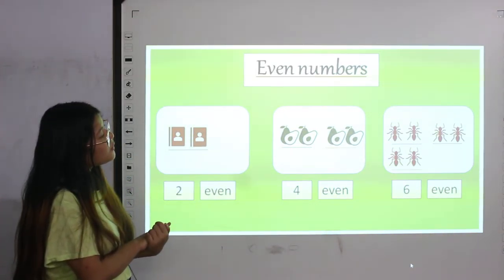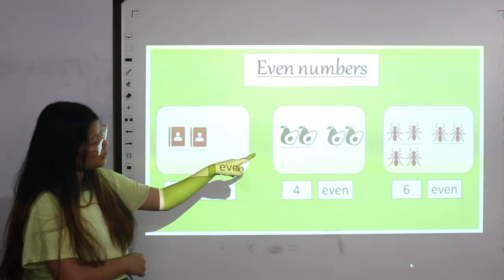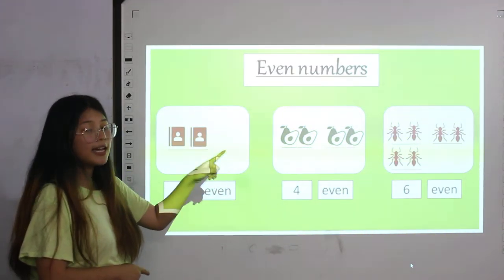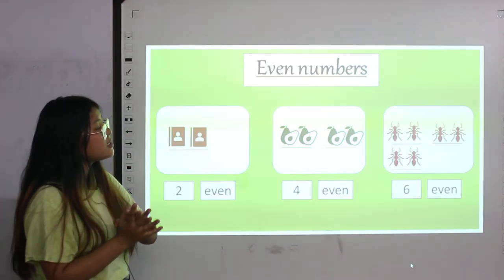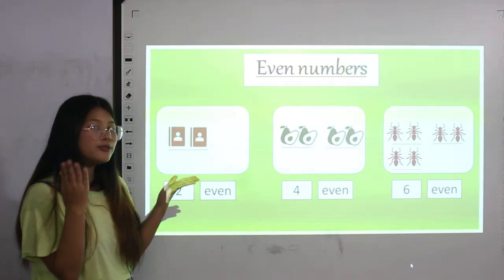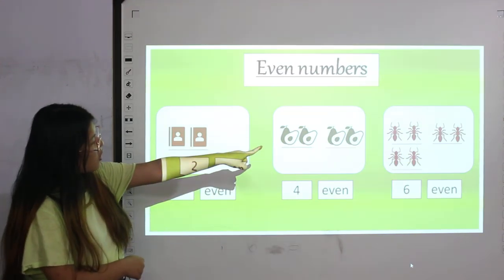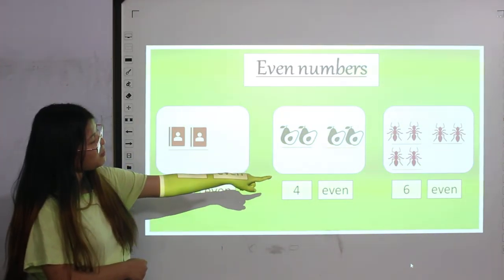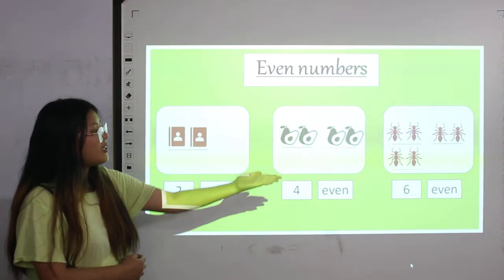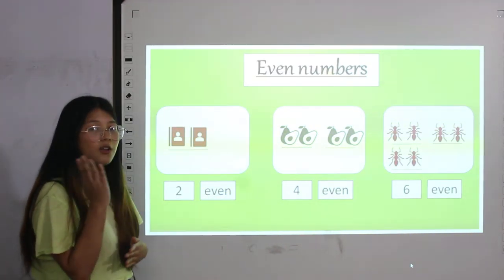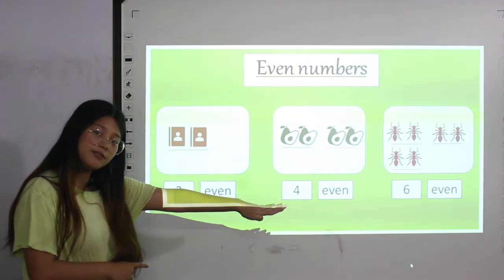Moving on to the next card, we have some ants. Let's count — one, two, three, four, five and six. We have six ants altogether. To see if six is odd or even, we have to pair them up. As you can see, all of them are in pair — no one is left alone. So number six is an even number.